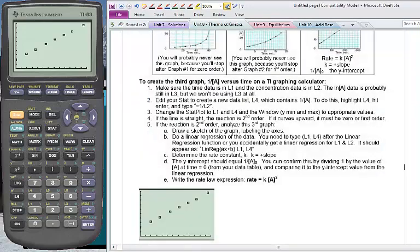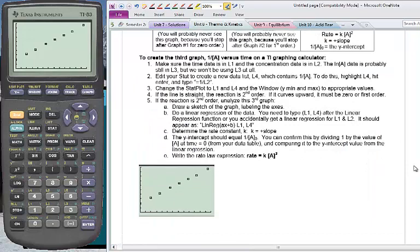So first draw a sketch of the graph labeling the axes. And I've already inserted that right down here. Labeling the axes would mean that our x value was time. Our y value was 1 over the concentration of our reactant. And time went from about 0 to about 6500. And our y axis went from about 0 to 500.